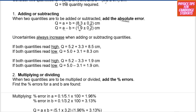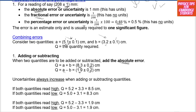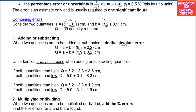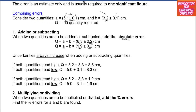If both quantities read high, we have 5.2 + 3.3 = 8.5, since the upper bound of 5.1 ± 0.1 is 5.2, and the upper bound of 3.2 ± 0.1 is 3.3. If both read low, adding the lower bounds gives 5.0 + 3.1 = 8.1. For the subtraction case, whether both quantities read high or both read low, the result remains 1.9 cm.